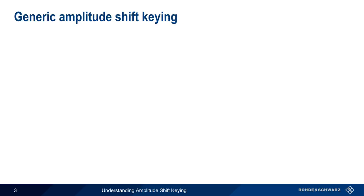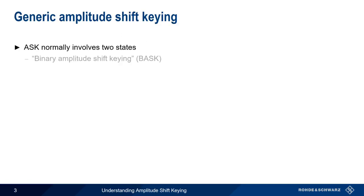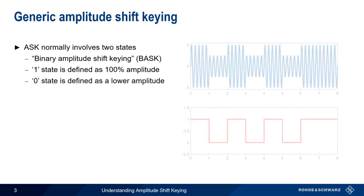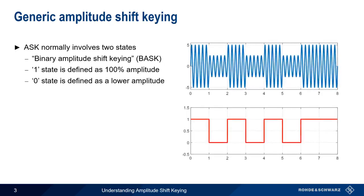With very few exceptions, Amplitude Shift Keying involves two states. Technically, this could be referred to as binary Amplitude Shift Keying, but you're unlikely to hear the specific term used since almost all applications of ASK use only two states. The one or on state is defined as 100% amplitude, and the zero or off state is defined as a lower amplitude, which can be either zero or some non-zero amplitude, as shown in the diagram here.